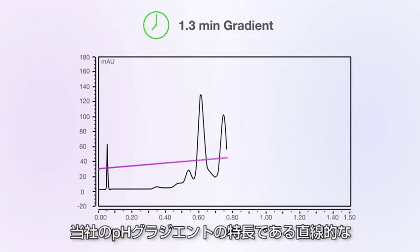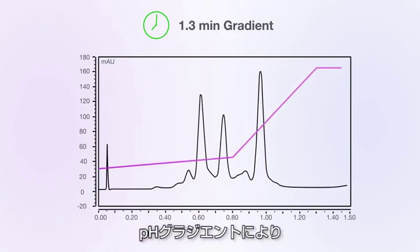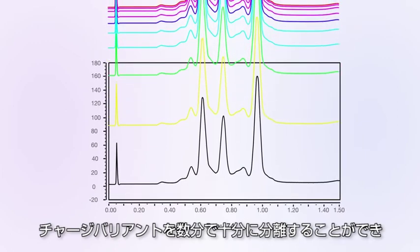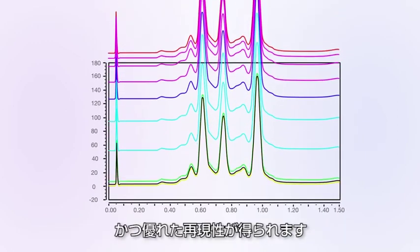With a linear pH gradient, protein variants can confidently be separated in seconds, with excellent reproducibility.